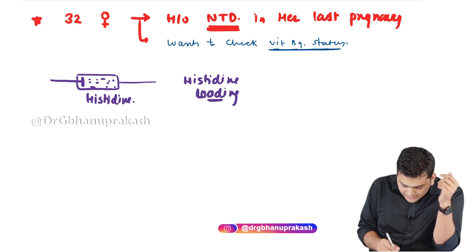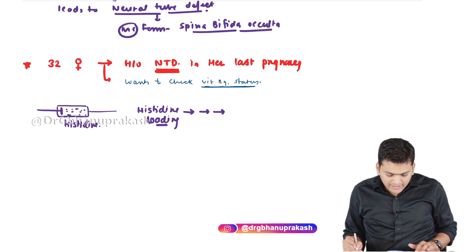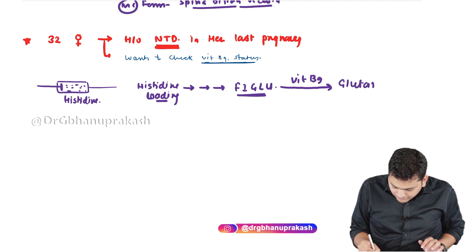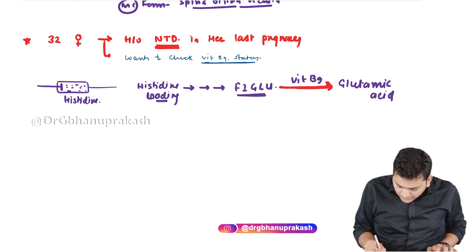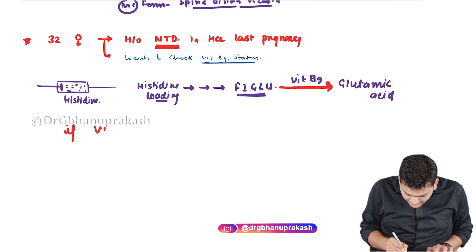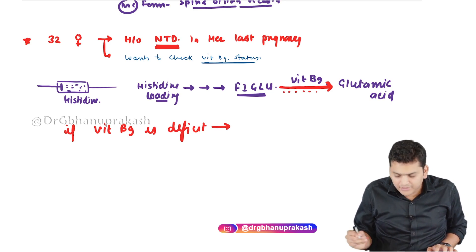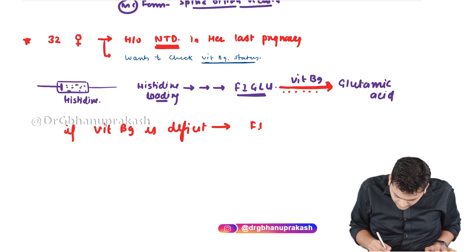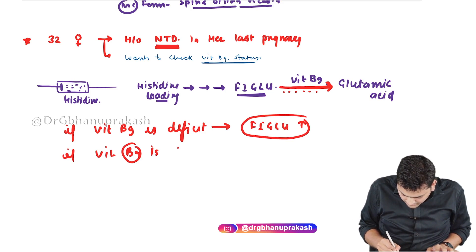In the histidine loading test, we take an injection filled with the histidine amino acid and inject it into the patient. This excess histidine undergoes the metabolic pathway and ultimately reaches the intermediate FIGLU. If the B9 level is normal, FIGLU will convert into glutamic acid. If vitamin B9 is deficient, this reaction will not take place and FIGLU will accumulate. So: if B9 is deficient, FIGLU is increased; if B9 is normal, FIGLU is normal.